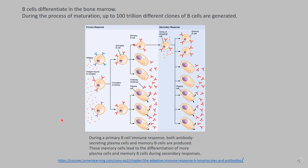B cells are made up of multiple types and secrete multiple kinds of antibodies. IgG antibodies are the most dominant form of antibodies present in the peripheral blood. These B cells differentiate in the bone marrow. Their variable portions see antigen, and the antigen binds to the receptor. There are millions and millions of kinds of B cells, but every B cell has a single receptor for a specific portion of a viral, bacterial, or self-antigen.